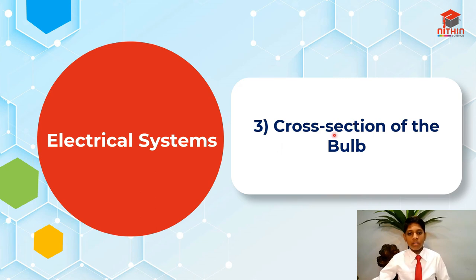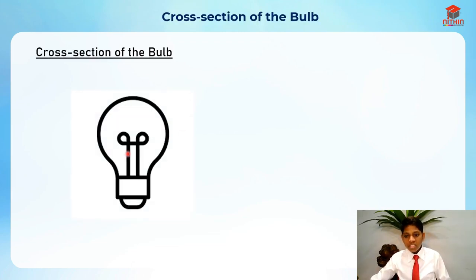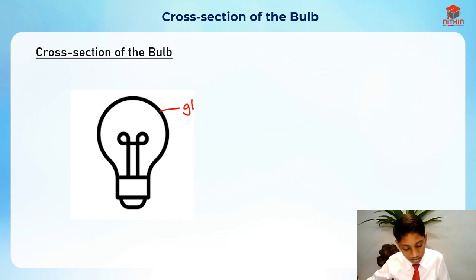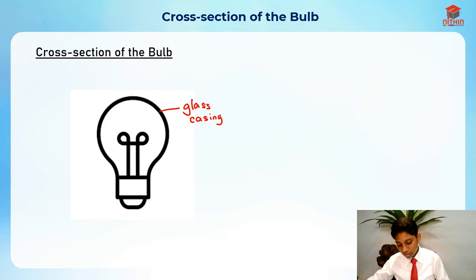For the third segment, I'm going to show you the cross-section of the bulb. Let's take a look. First, we have the glass casing — this outer part is basically the glass casing. Next, we have the filament.